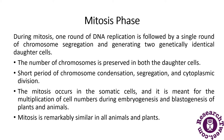During the mitosis phase, there is one round of DNA replication, which is followed by a single round of chromosome segregation. This generates two identical daughter cells that are genetically very similar to the parent cell.